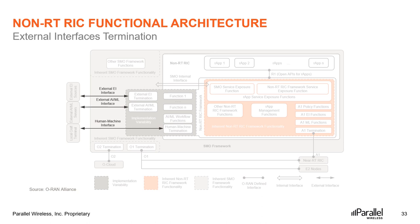External AI termination is connected to external enrichment information sources to import enrichment information for non-RT RIC applications. External AI-ML termination is connected to an external AI-ML server for machine learning model importation. Human-machine termination is used to inject RAN intent manually. All three terminations can reside inside the non-RT RIC or in the SMO but outside of the non-RT RIC. At present, specifications of these external interfaces are still under discussion in the ORAN Alliance.